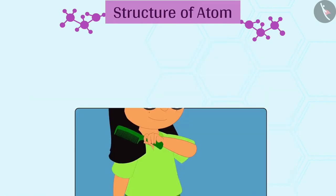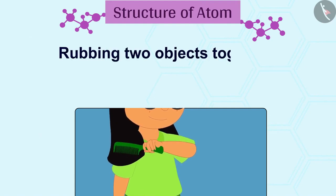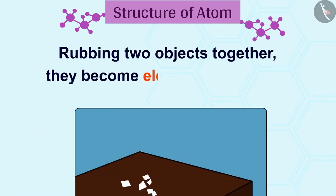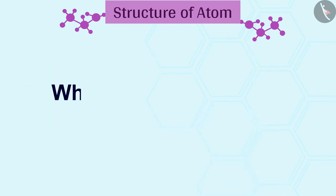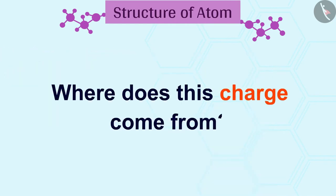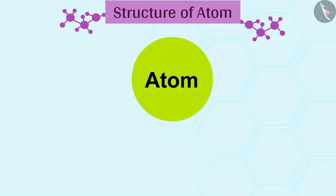We conclude that on rubbing two objects together, they become electrically charged. Where does this charge come from? This question can be answered by knowing that an atom is divisible and consists of charged particles.